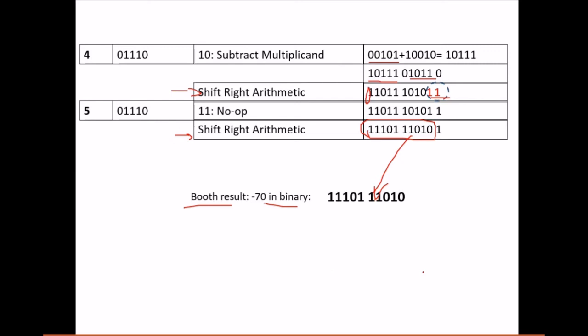This final value is our Booth's algorithm result, representing minus 70 in binary — which is the correct answer for 14 times minus 5. Hope you got a clear idea of Booth's algorithm. Thank you so much, take care.